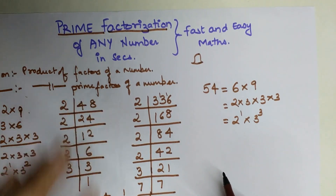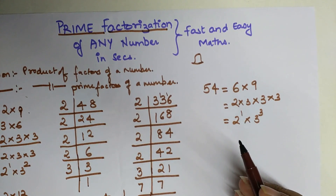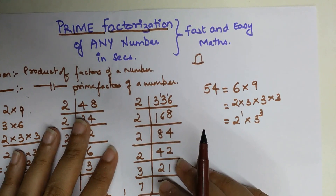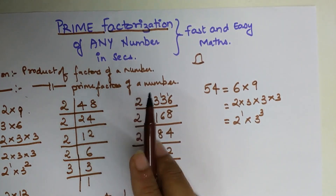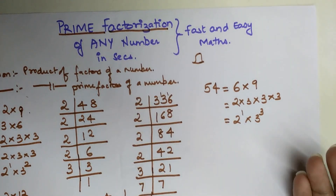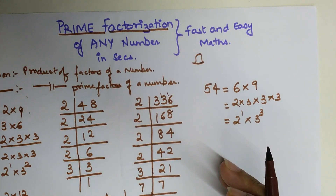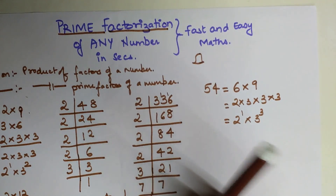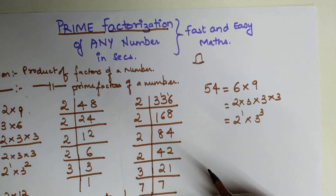Students, this method works only if your knowledge of divisibility rules and multiplication tables is very strong. Also, to find the prime factor of any number you really need to know what the prime numbers are. I have made a video to help you find prime numbers from 1 to 100 in a matter of seconds — the link is mentioned above and in the description.